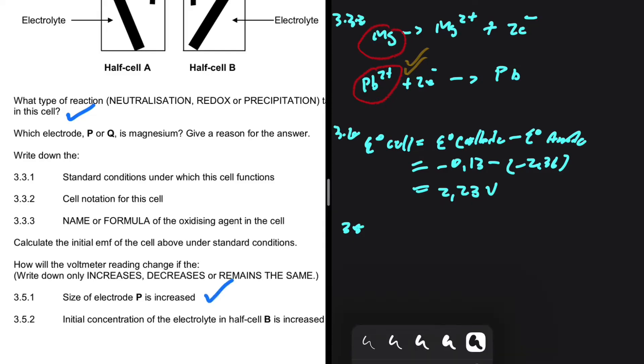So increasing the size of an electrode does not affect the EMF. So the answer to 3.5.1 will be remains the same.